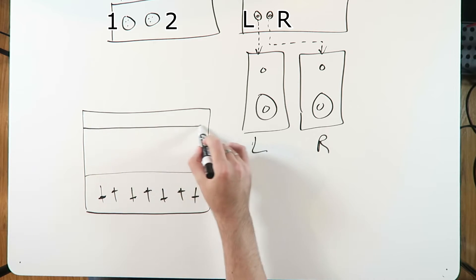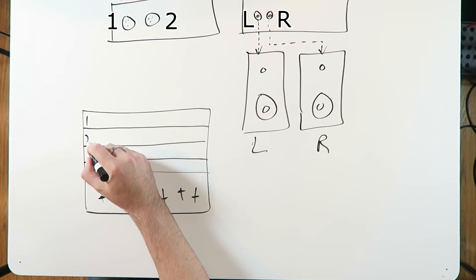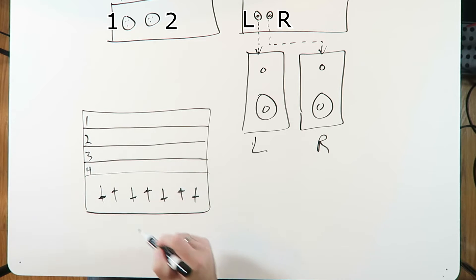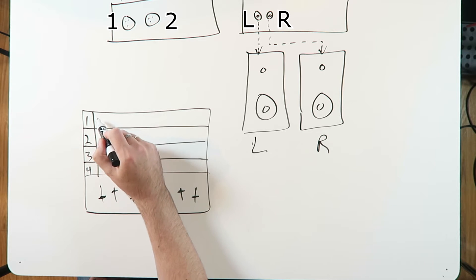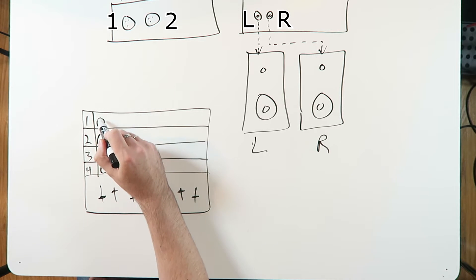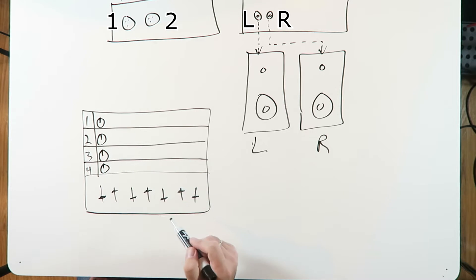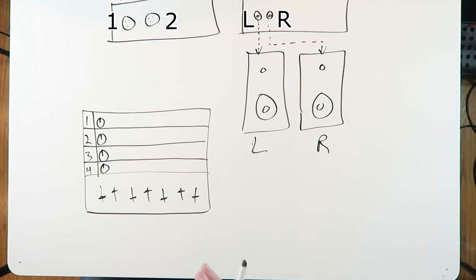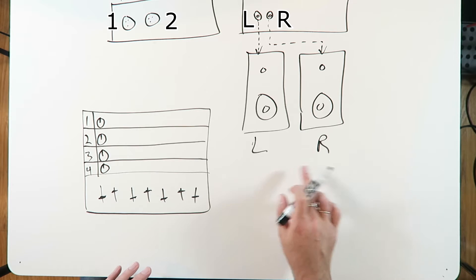Here in our DAW software we've got our mixer window with faders, and let's say we've got four tracks. For each track we have a pan control — let's imagine that as the notch on the pan control, panned at 12 o'clock. 12 o'clock in the world of panning means we're panned center. Anything panned center you're going to hear equally out of both speakers.